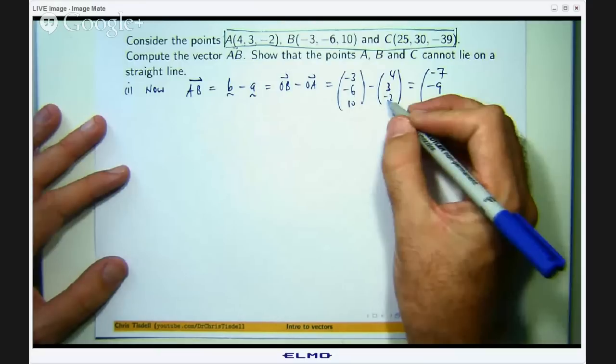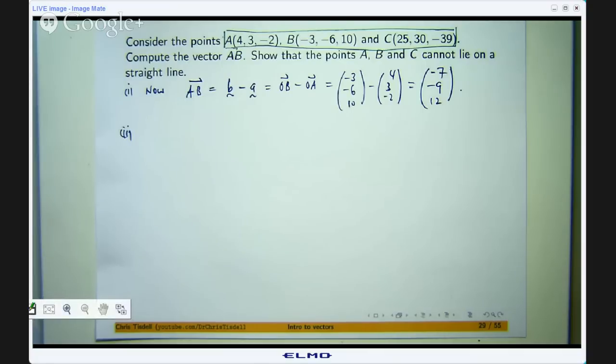Now the second part of this question asks you to show that the points A, B and C cannot lie on the same straight line. Now all we need to do in order to show this is to show that the vector AB is not parallel to the vector BC or AC.